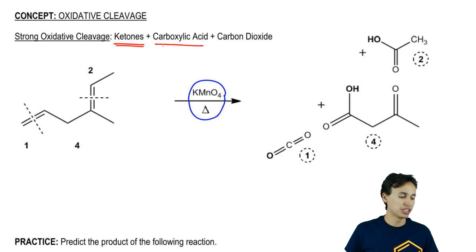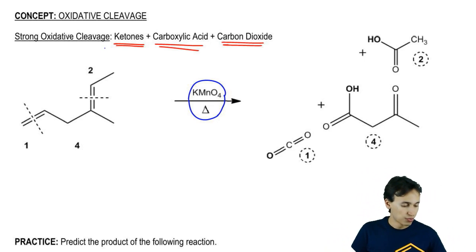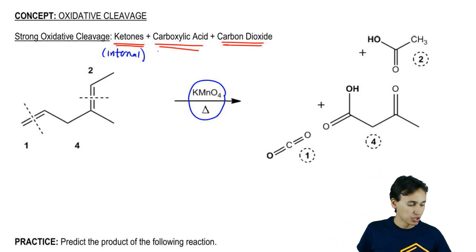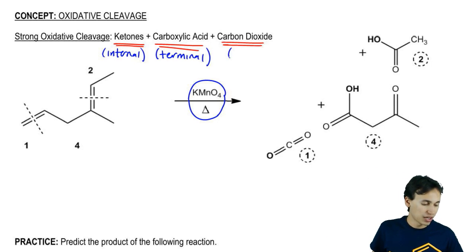Ketones, carboxylic acids, and carbon dioxide. So when would you get each one? You get ketones for what I call internal double bonds, for internal alkenes. You get carboxylic acid for terminal alkenes. And you get carbon dioxide for one carbon fragments.